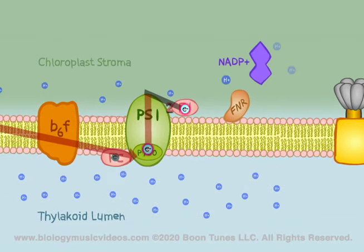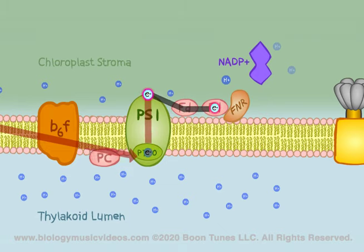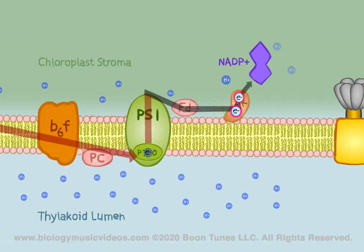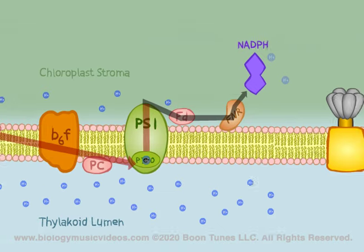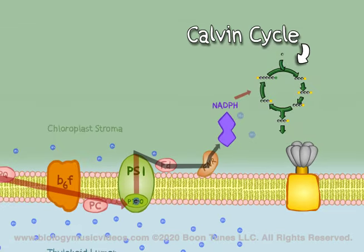The PS1 electron was gained by a short electron transport chain. Reactions occur, then it takes a place on an NADP+ that awaits. The NADP+ gets reduced and NADPH is produced, which has a lot of work to do in the Calvin cycle, or part 2.